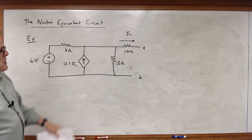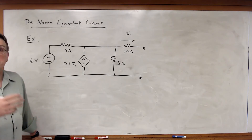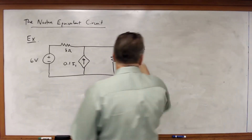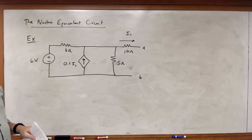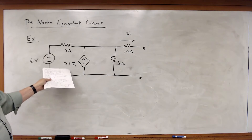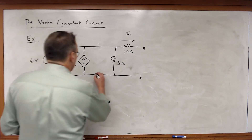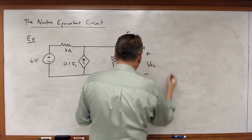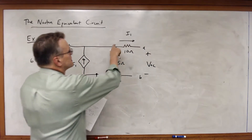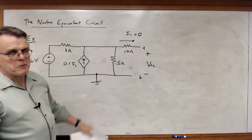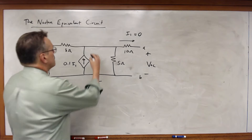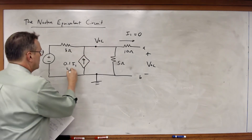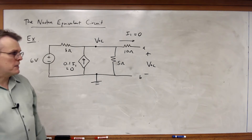Let's find the Norton equivalent for this circuit. I'm going to first find the Thevenin equivalent. In this case, I've got I1 flowing through the 10 ohm resistor — that's the dependent source variable for that 0.1 times I1 current-controlled current source. I'm going to ground the bottom node, and then this becomes V_OC. Since I1 by inspection must be equal to 0 because it's open circuit, that means I must also have V_OC on this side, and that dependent source is just equal to 0 too.